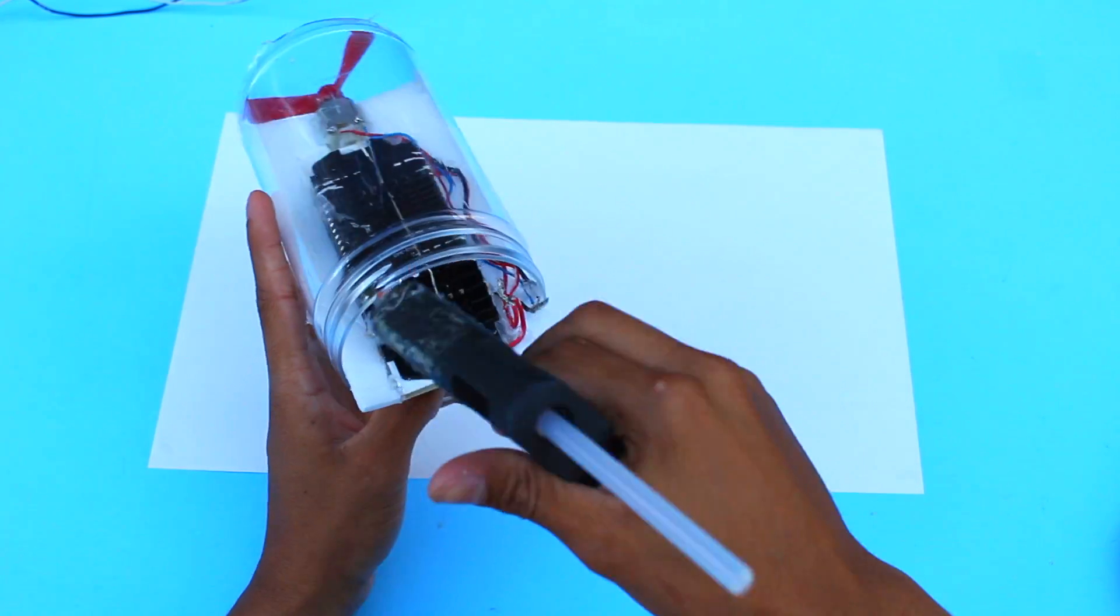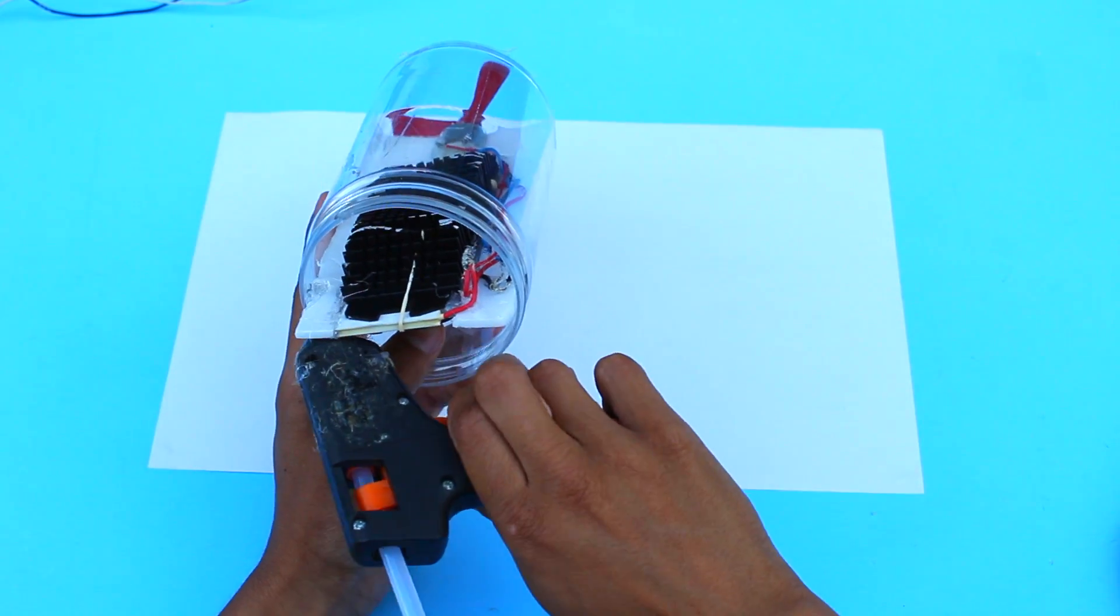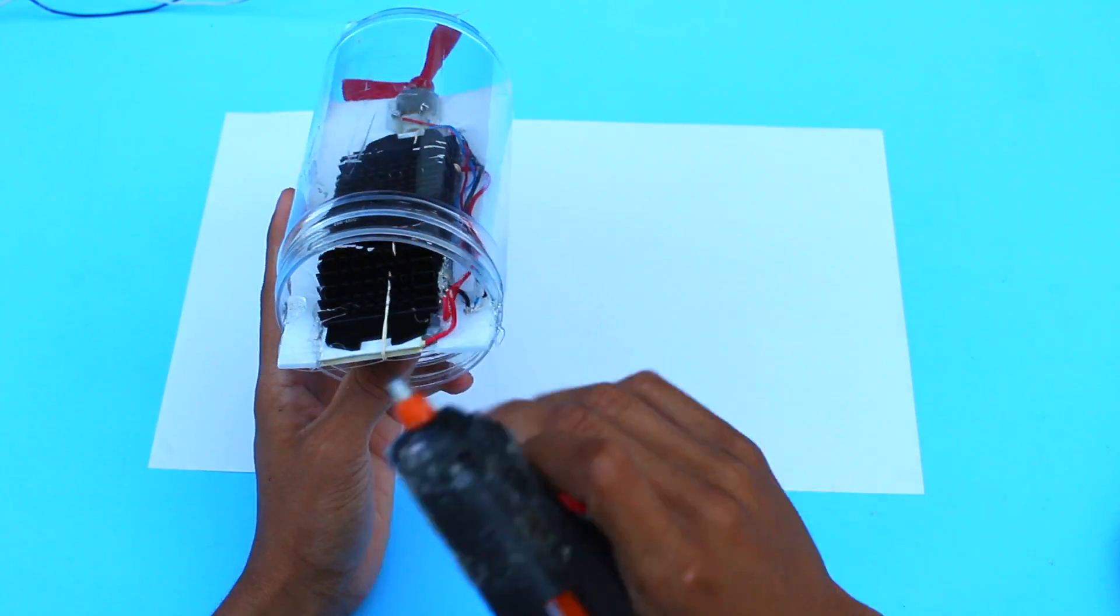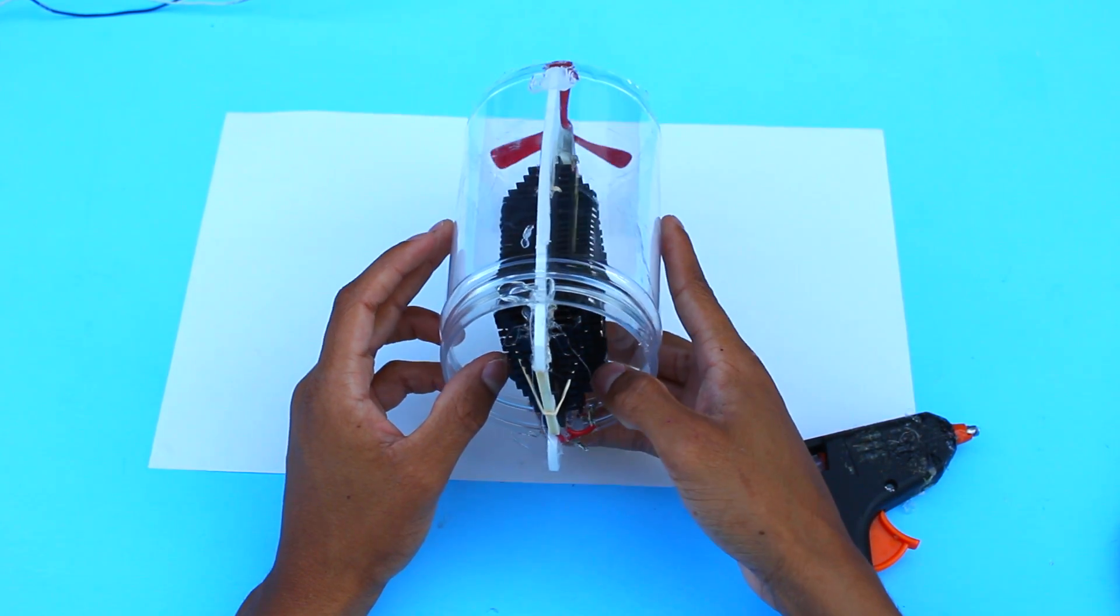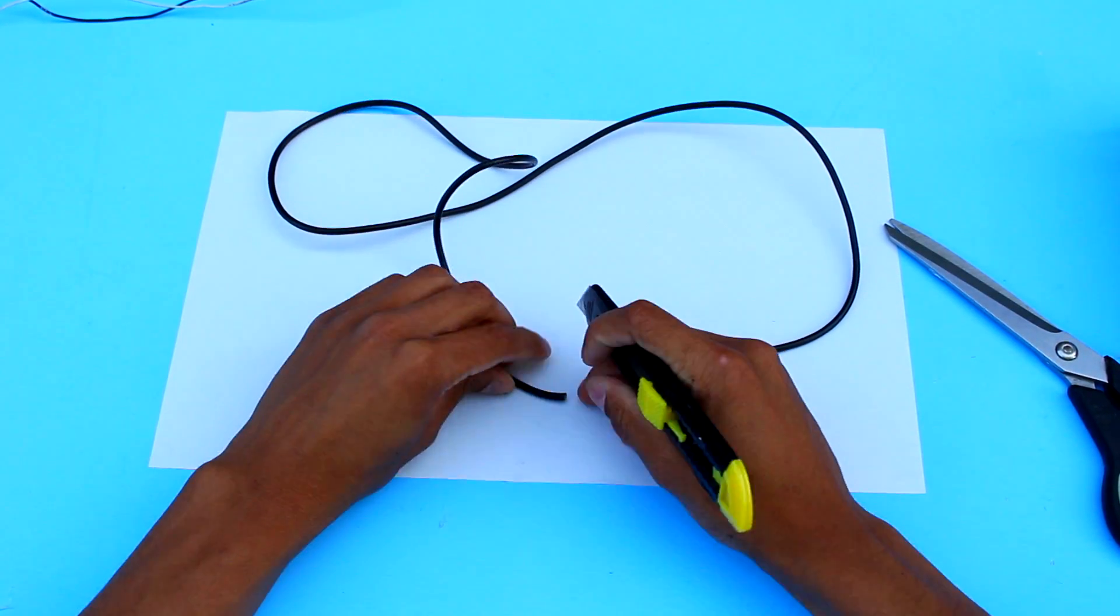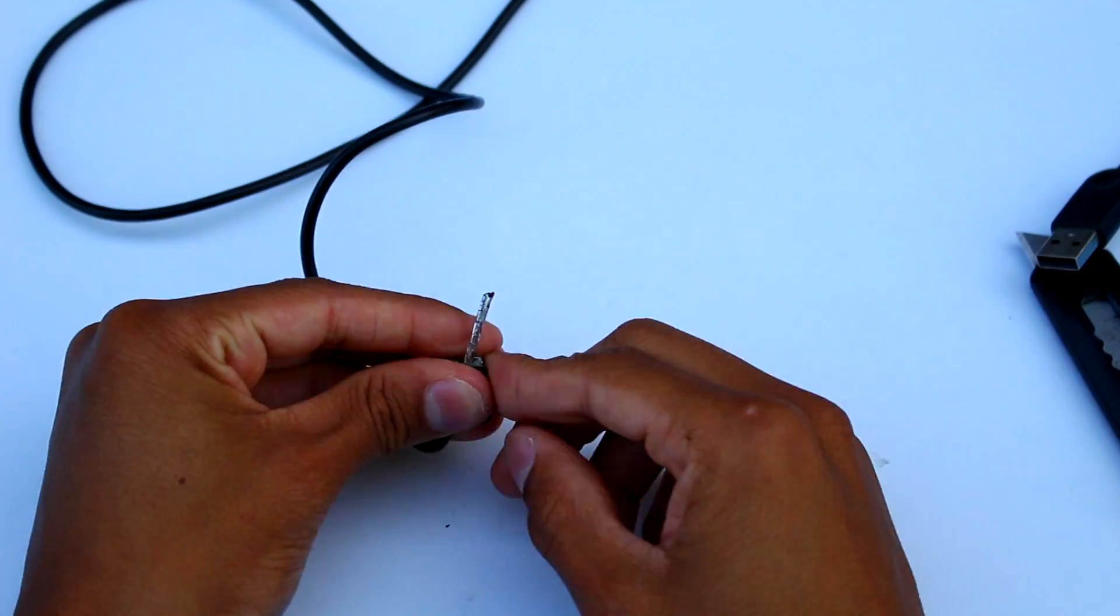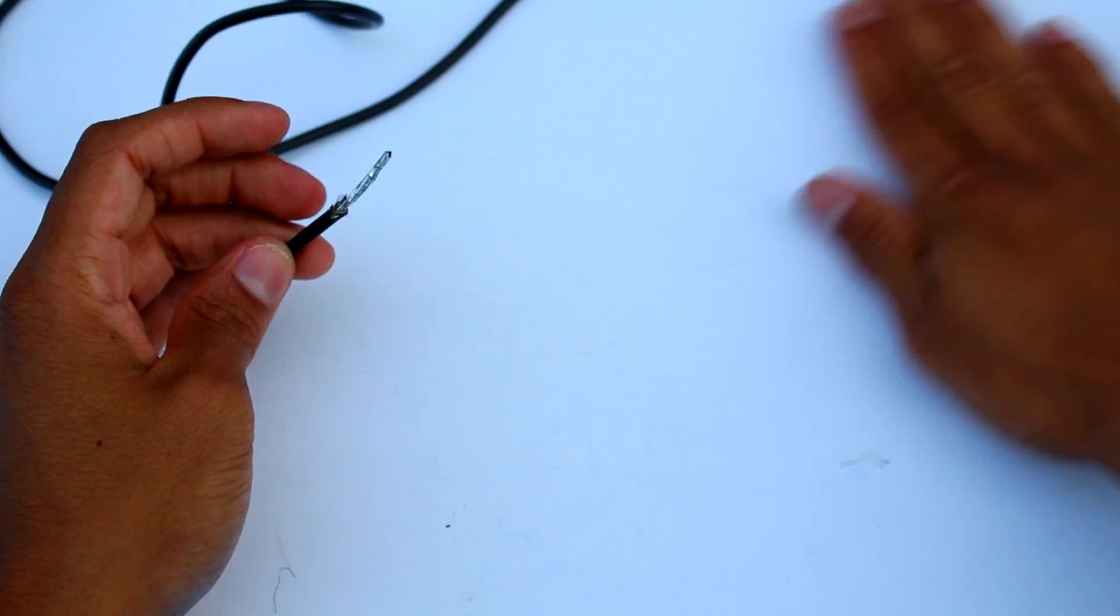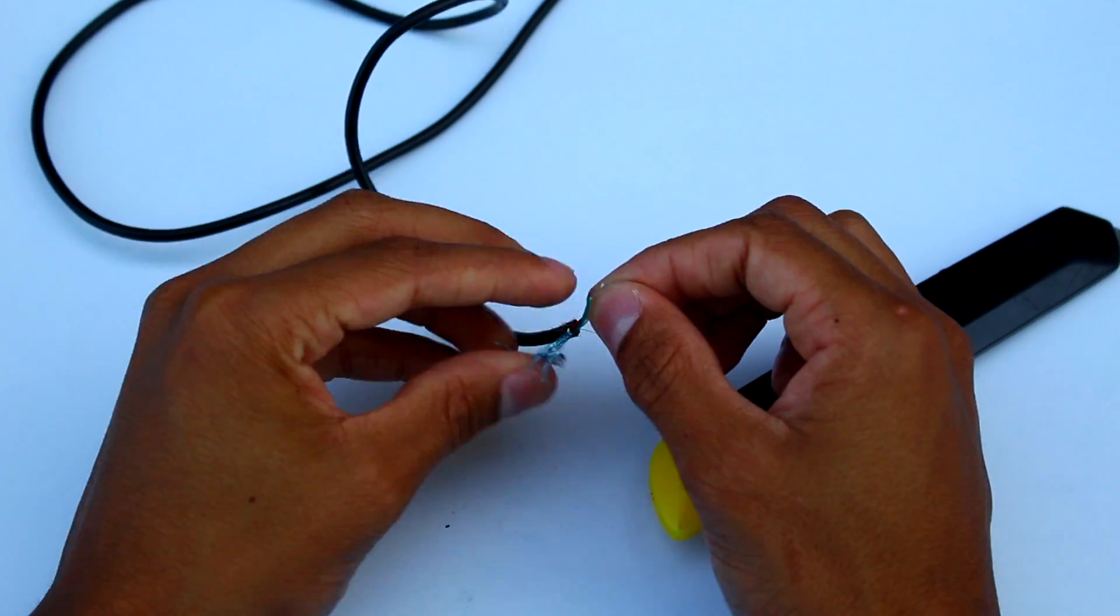Now, I'll glue it into place so nothing rattles around. Now, I'm going to get a USB cord. You can use any USB cord you have laying around or buy one from the dollar store. And I'll split the ends of it to grab a positive and negative wire, which will be the red and black one.